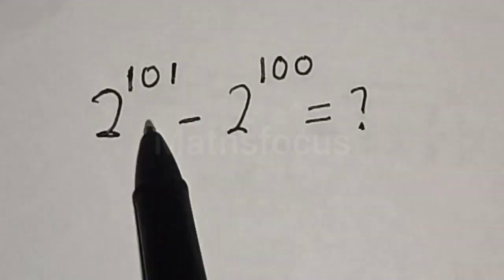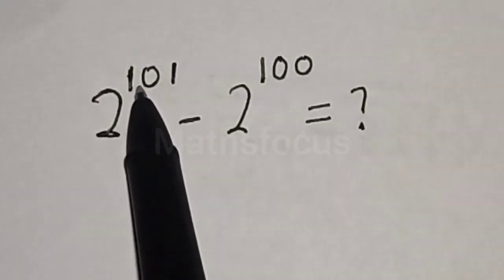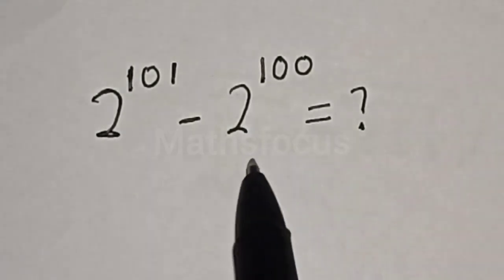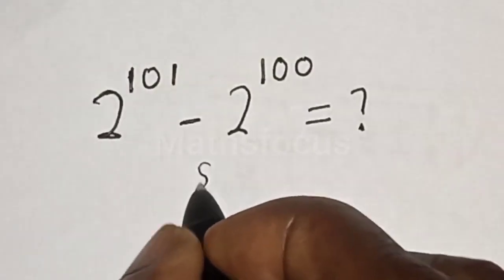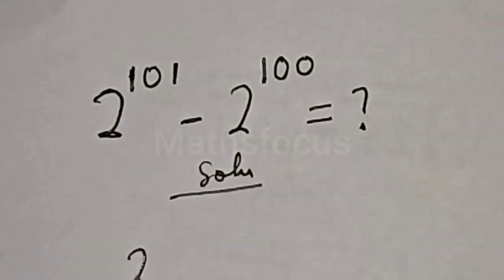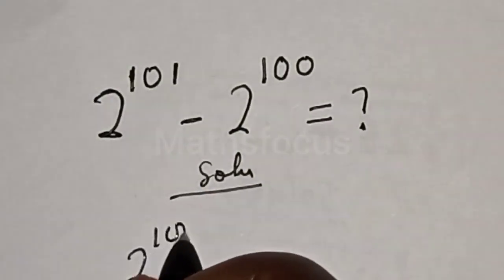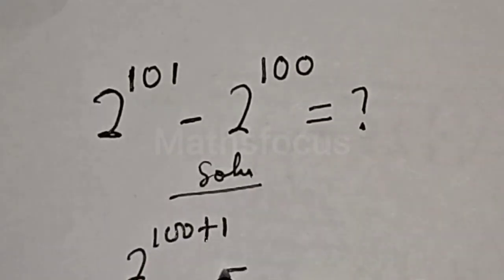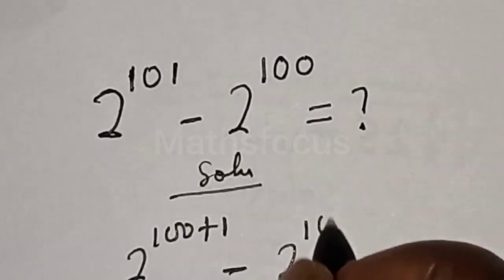We quickly want to simplify this math question: 2 raised to power 101 minus 2 raised to power 100. 2 raised to power 101 can be written as 2 raised to power 100 plus 1, minus 2 raised to power 100.